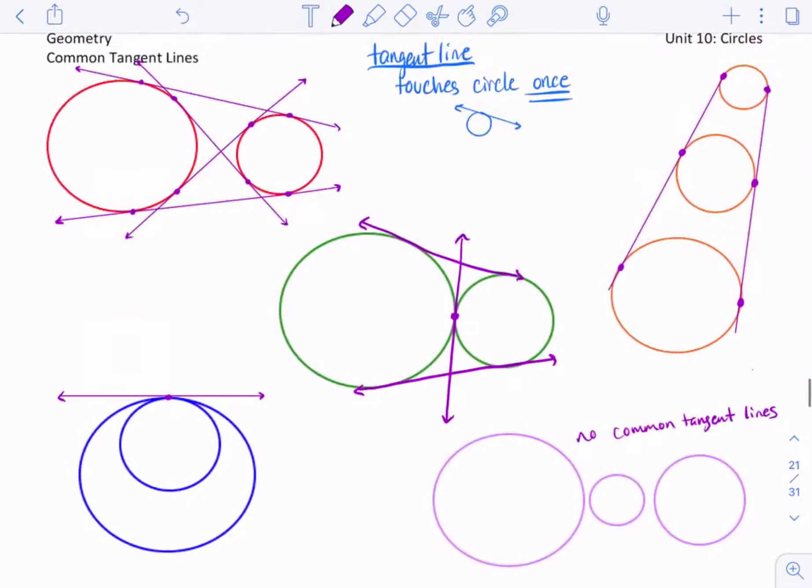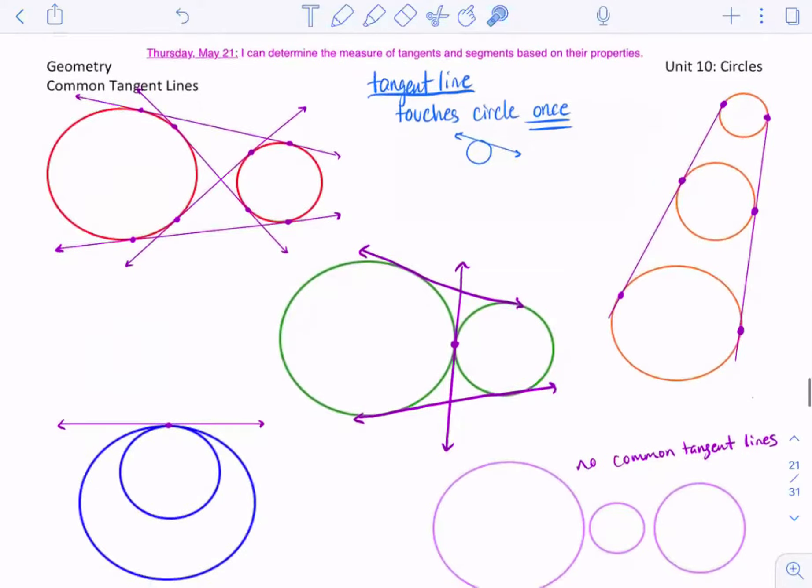And when I look at those three orange circles, it looks like something we used to learn in art class regarding perspective, I think it was called. Yeah, it does. It is called that because when something is further away, it should be smaller. Something's closer, it should be larger. Yes. So let's just reflect back again. What is today's goal? To determine measure of tangents and segments based on their properties. Okay, so now we really understand what a common tangent line is.